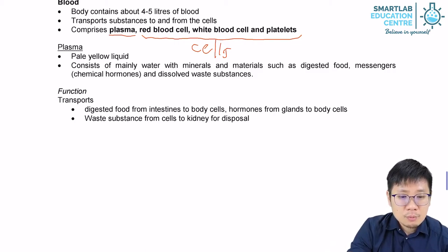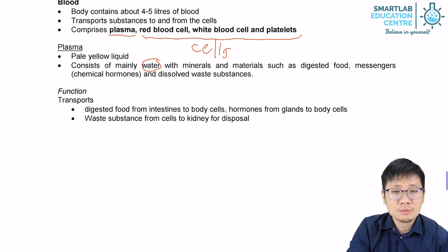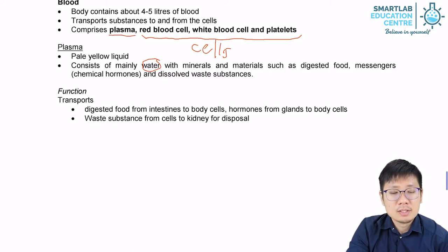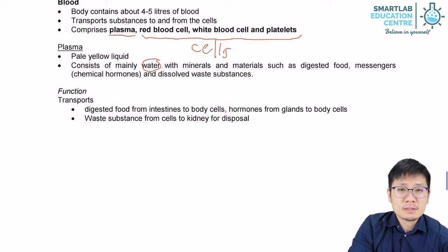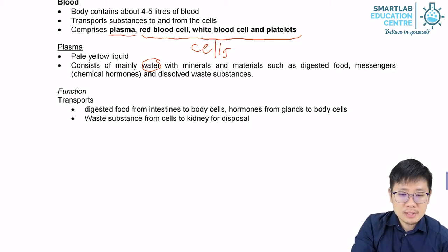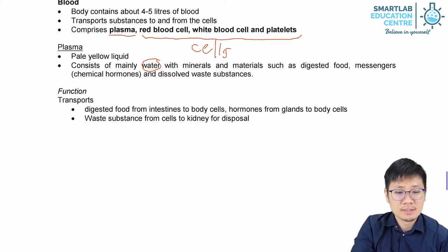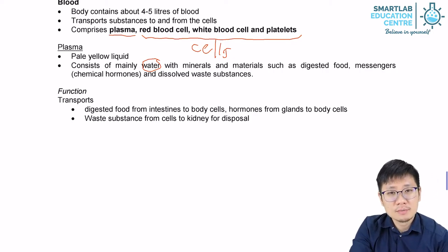Plasma consists mainly of water. It also contains a lot of dissolved minerals and materials such as digested food, nutrients like sugars and amino acids, hormones, and also waste substances. The general function of plasma is to transport substances — that includes transporting nutrients from your intestines to your cells, hormones from your endocrine glands to your body cells, and waste substances from your body's cells to the kidneys for disposal.